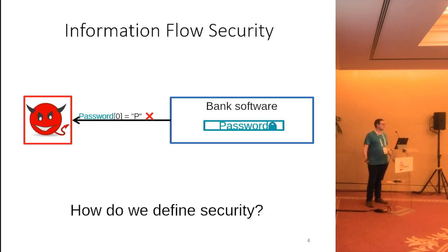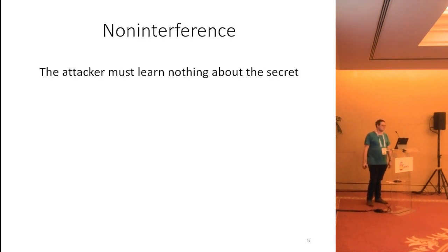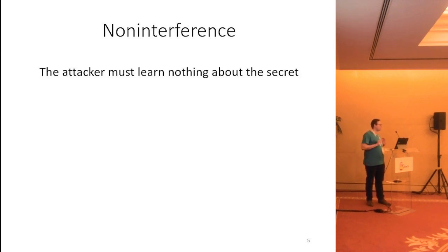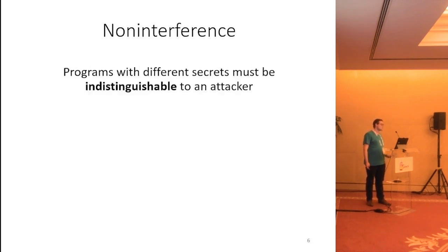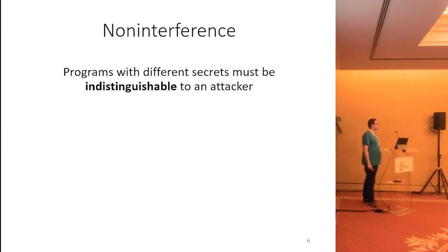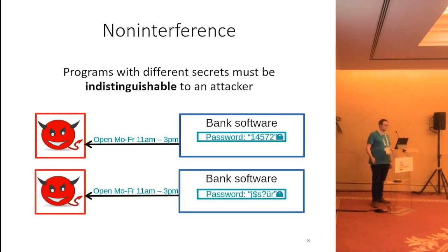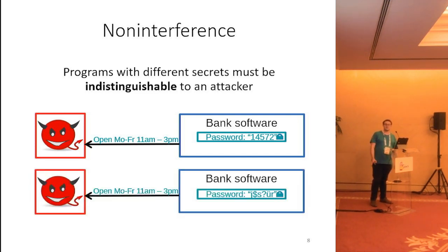There's a very standard answer to this question: a security property known as non-interference, which in essence says that for a program to be secure, an attacker must be able to learn absolutely nothing about the secret. More formally, if we have different versions of the program with different secrets, then they must be indistinguishable to an attacker. So if we have our bank software with our password and we change the password, any outputs the attacker is able to observe, like the opening of our bank, shouldn't change at all.